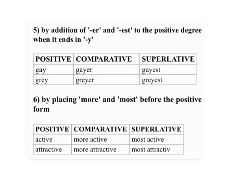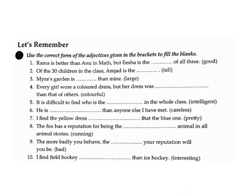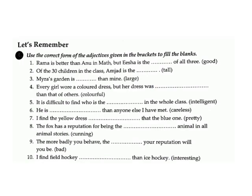Page 47. Let's remember. Exercise A: Use the correct form of the adjectives given in brackets to fill the blanks. 1. Rama is better than Enu in math, but Ashok is the ___ of all. Answer: best. 2. Of the 30 children in the class, Majid is the ___ tall. Answer: tallest.